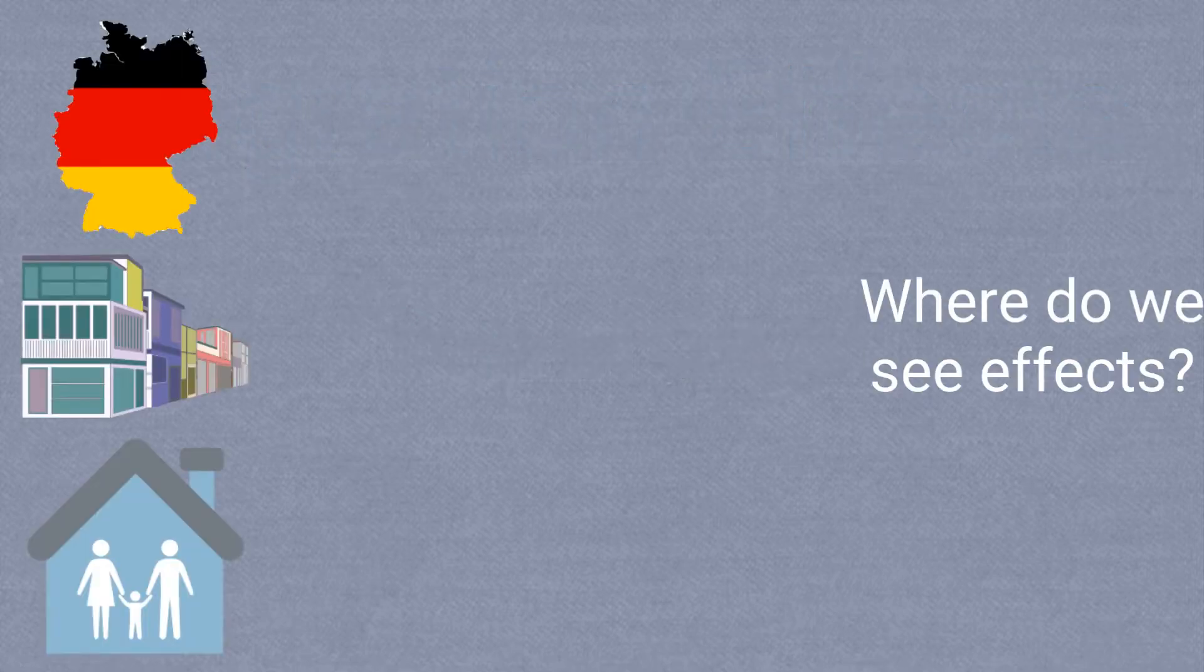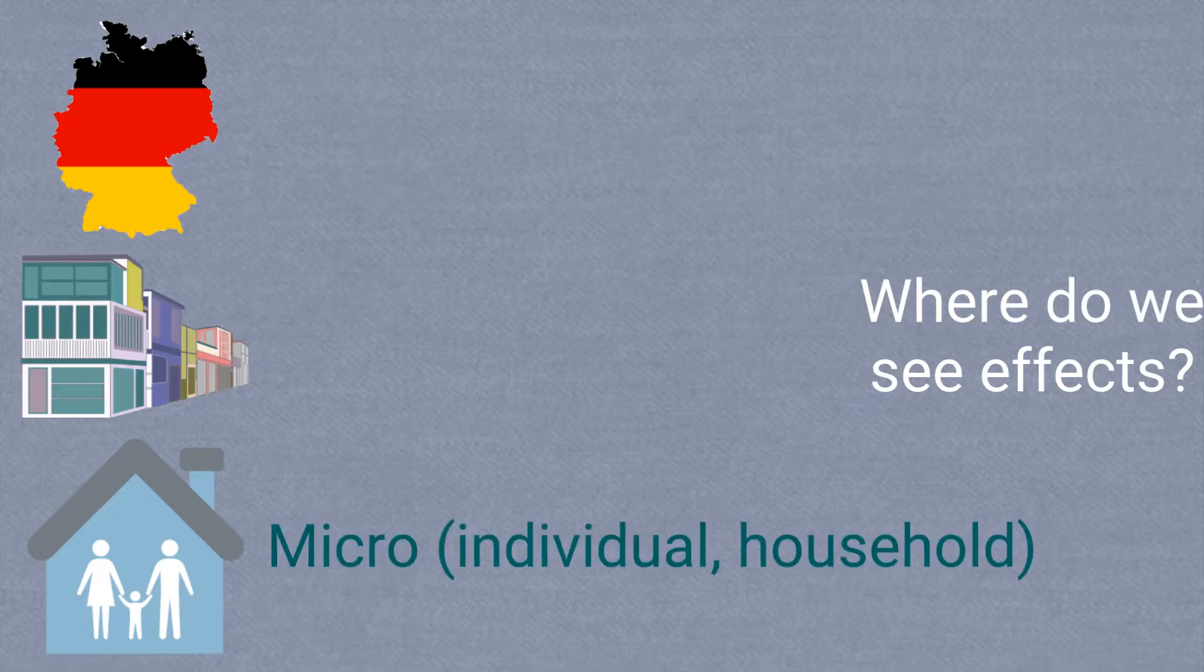Talking about migration effects is tricky for a few reasons. These results can be observed at different levels and time periods. We will discuss how mobility can have micro-level effects, for example, on the immediate family members and households that an immigrant leaves from.